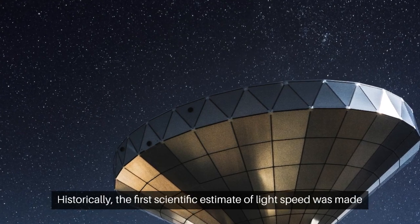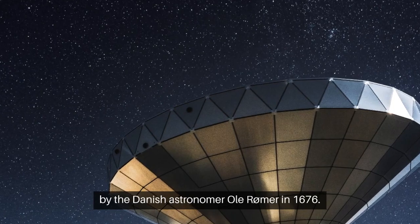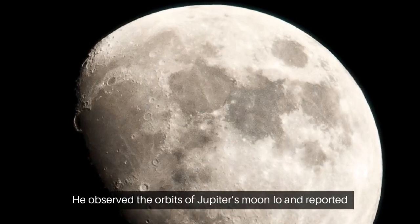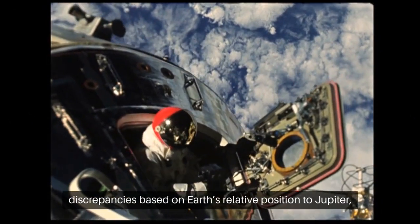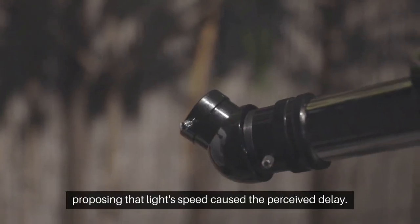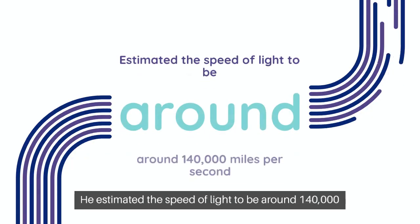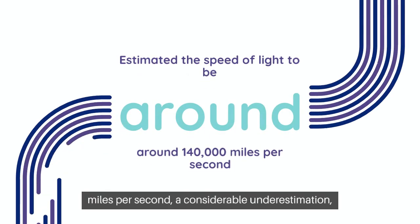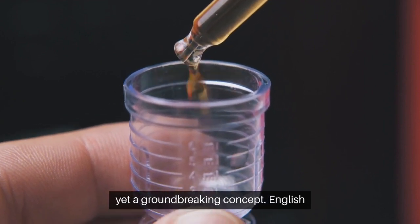Historically, the first scientific estimate of light speed was made by the Danish astronomer Ole Rømer in 1676. He observed the orbits of Jupiter's moon Io and reported discrepancies based on Earth's relative position to Jupiter, proposing that light speed caused the perceived delay. He estimated the speed of light to be around 140,000 miles per second, a considerable underestimation, yet a groundbreaking concept.